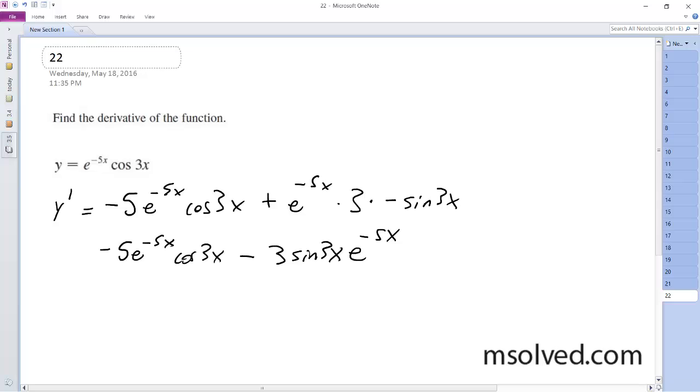So what we can do is factor out, excuse me, e raised to the negative 5x, or negative e raised to the negative 5x, and we get 5 cosine 3x plus 3 sine 3x. This is it.